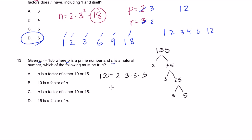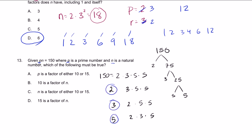For example, if p was 2, then n would be 3 times 5 times 5. If p were 3, then n would be 2 times 5 times 5. If p were 5, then n would be 2 times 3 times 5. So p has to be one of the prime factors of 150, and n is whatever's left over when you divide by that p. Which of the following must be true? p is a factor of either 10 or 15. Let's see: 2 is a factor of 10, 3 is a factor of 15, 5 is a factor of both 10 and 15. So that actually looks like the correct answer.